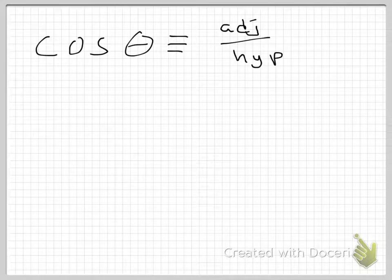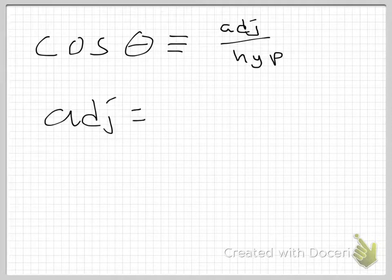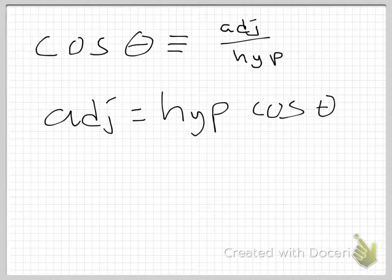I'm going to cross multiply the hypotenuse. Or, in better math language, I'm going to multiply both sides by the hypotenuse. And I get that the adjacent side is equal to the hypotenuse times the cosine of theta.